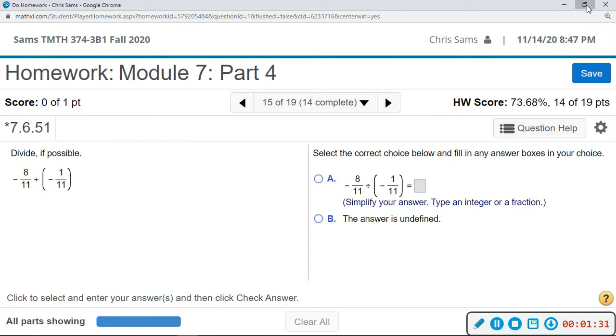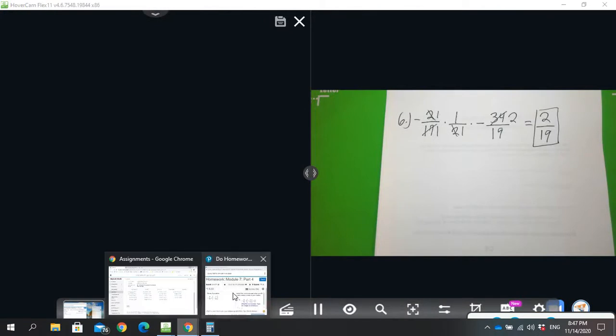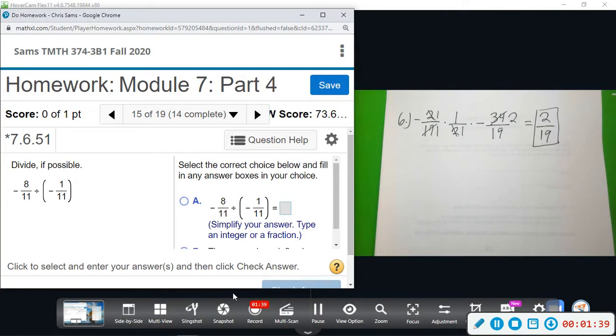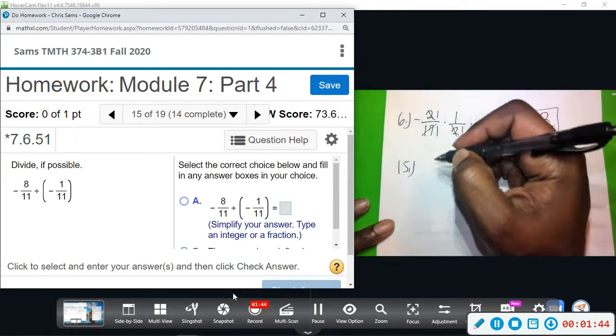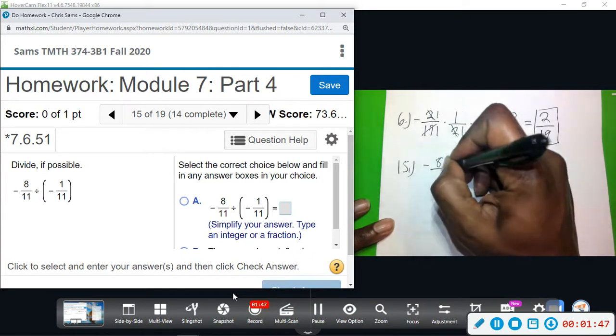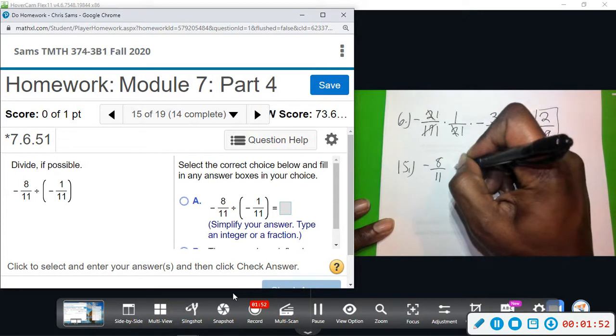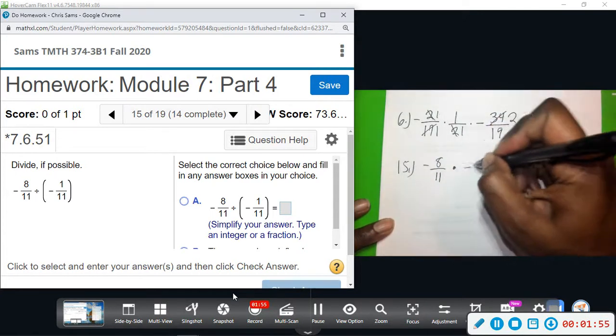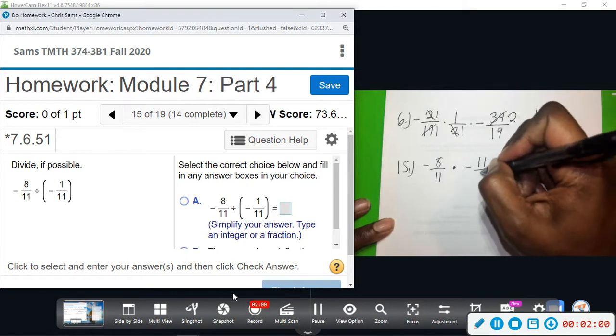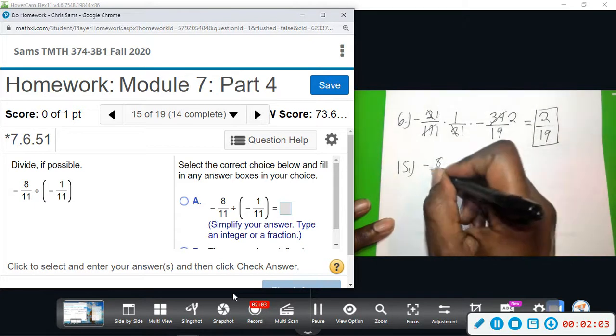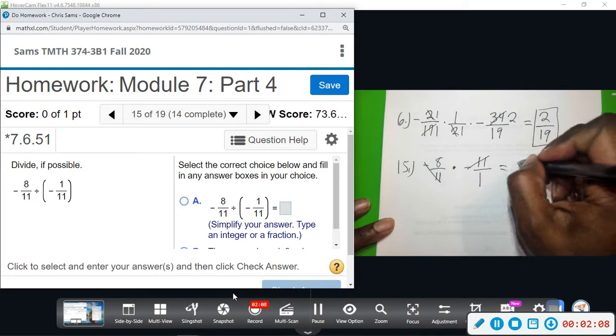And then this one, the process, we need to remember when we are dividing fractions. There's no such things as division. So we have negative 8 over 11. Division, remember we keep, change to multiplication, and flip. So negative 11 over 1. And look, the negative 11 will go away with the negative 11. So we just have 8 over 1, which leaves us with 8.